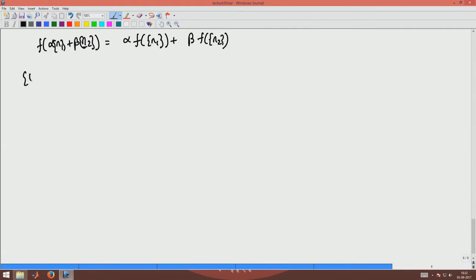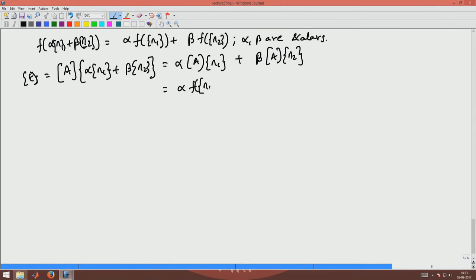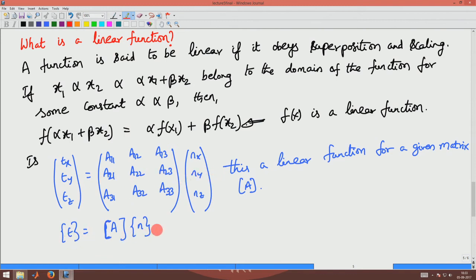So what do I have? I have T = A times (αn₁ + βn₂). This will be A·n₁·α + β·A·n₂ because α and β are scalars. So this is nothing but α·f(n₁) + β·f(n₂). What we found is this to be a linear function.